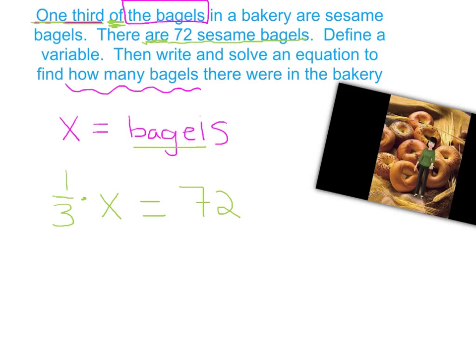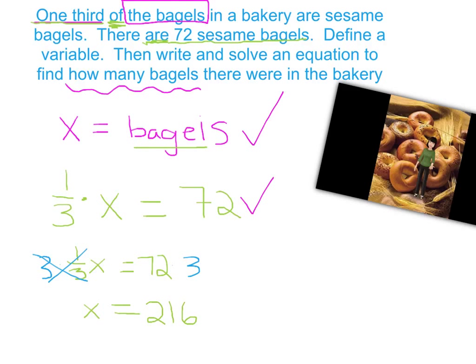Now solve for x. To solve for x, we need to multiply both sides by its reciprocal. So one-third x equals 72, and the reciprocal is 3, giving us x equals 216. So we've done three things: define the variable, write the equation, and solve the equation.